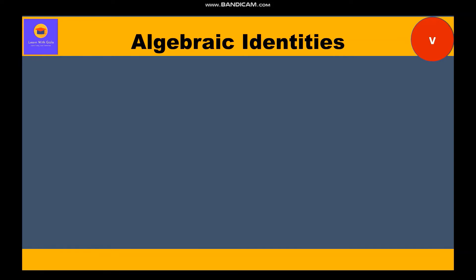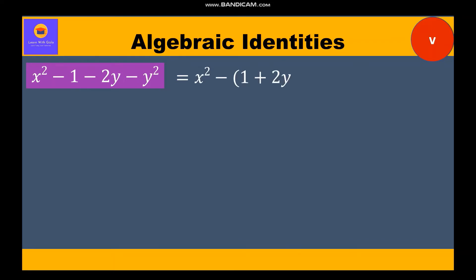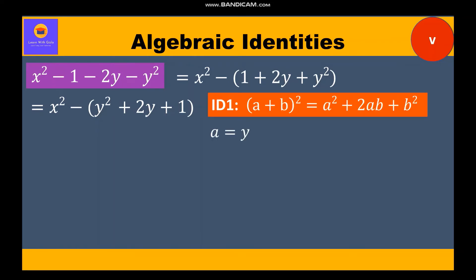Question 5: factorize x² - 1 - 2y - y². There are four terms, so we need to do some grouping to get an identity form. We take x² separately, then factor out a minus sign to write -(1 + 2y + y²). The expression becomes x² - (y² + 2y + 1). The second bracket is clearly identity 1 where a = y and b = 1.